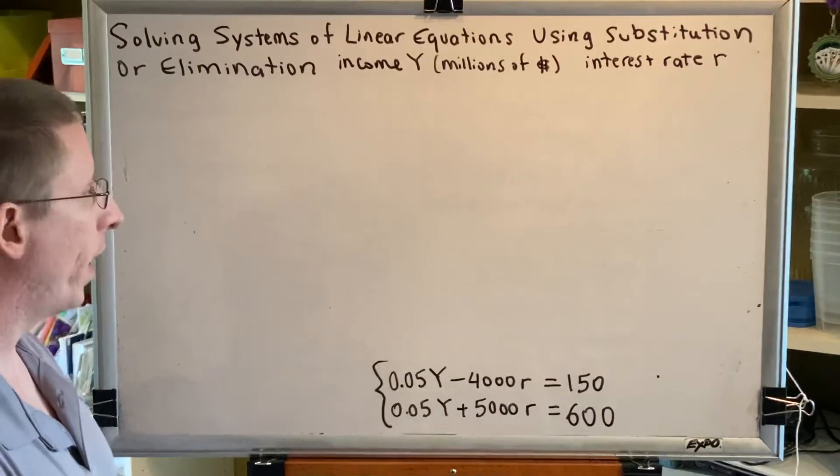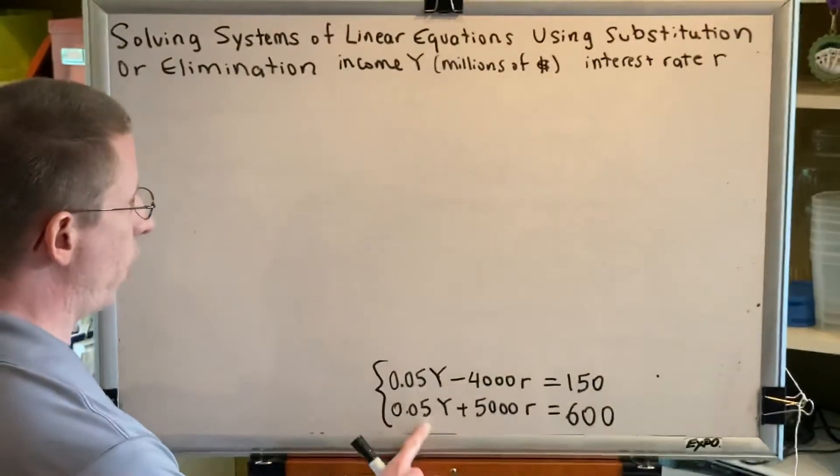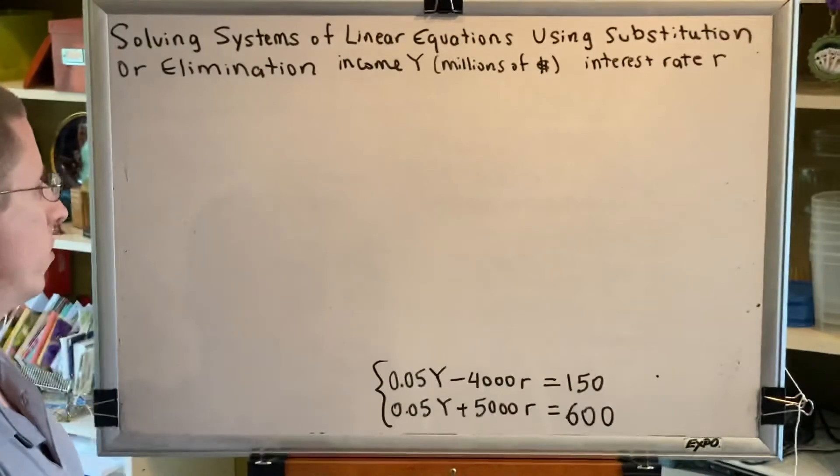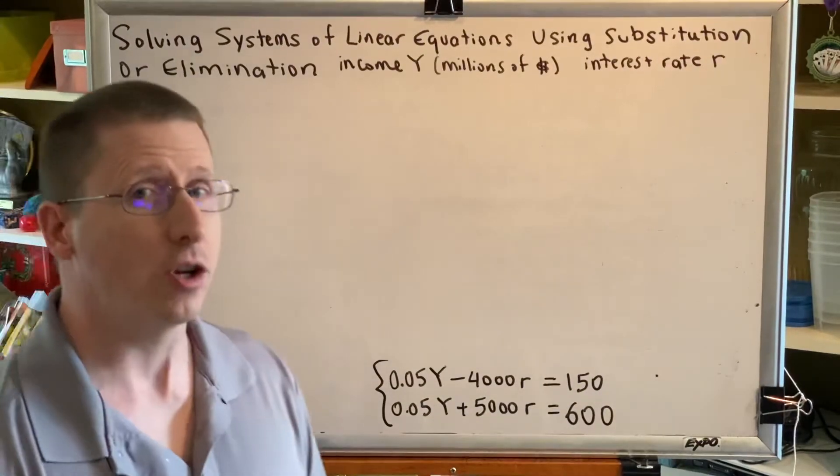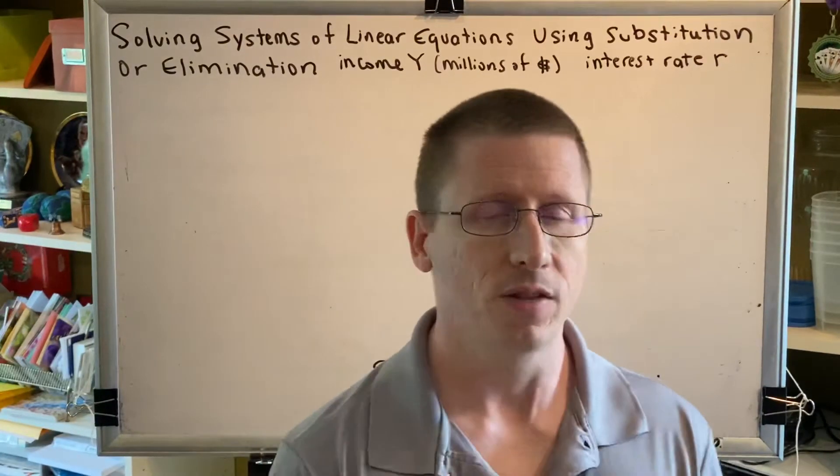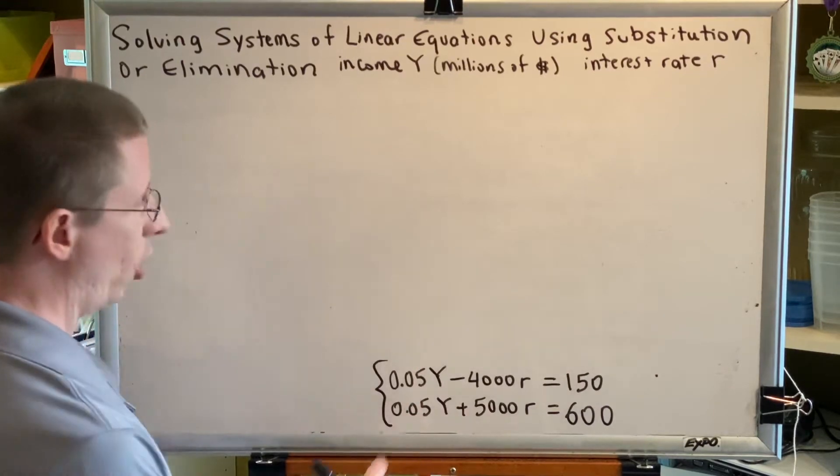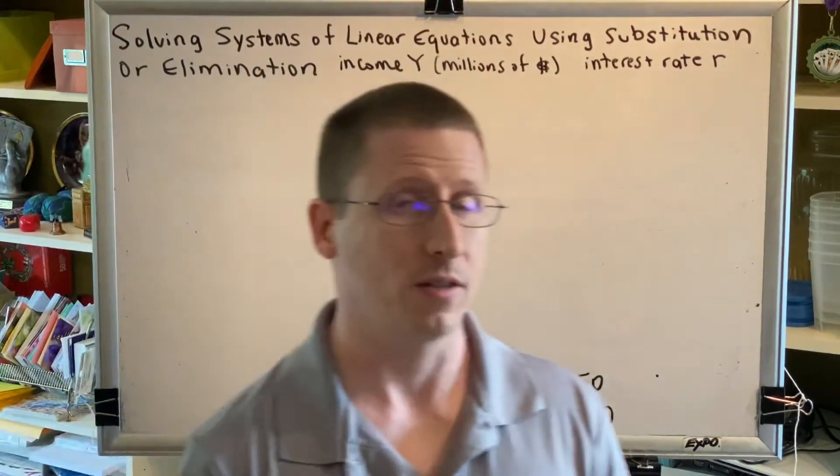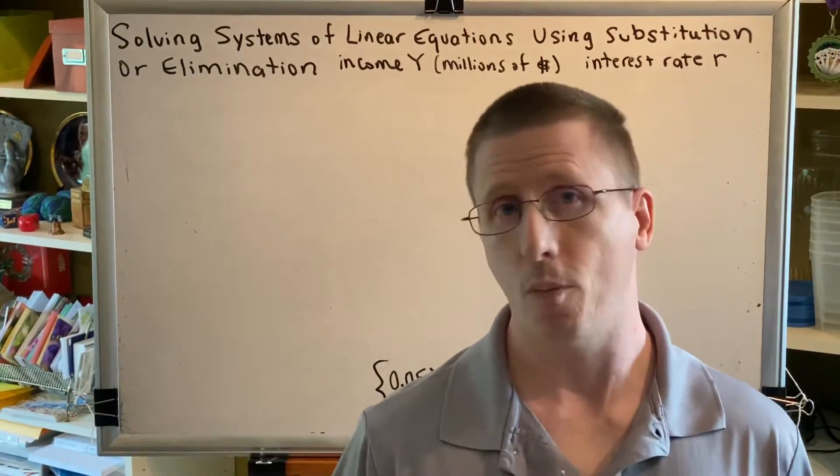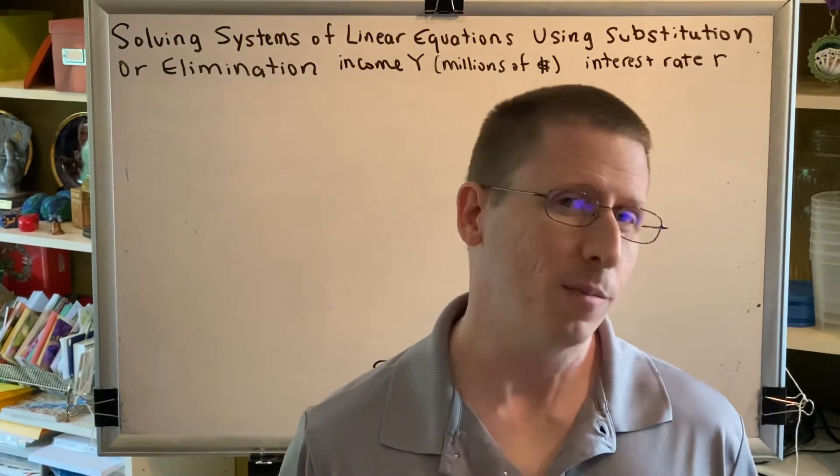Well, if I look at all of my coefficients, I notice that there are no ones or negative ones. So I'm tempted to use elimination for this problem. Something else that's suggesting elimination might be a good idea is that my capital Y terms are almost opposites. They both have the same 0.05.